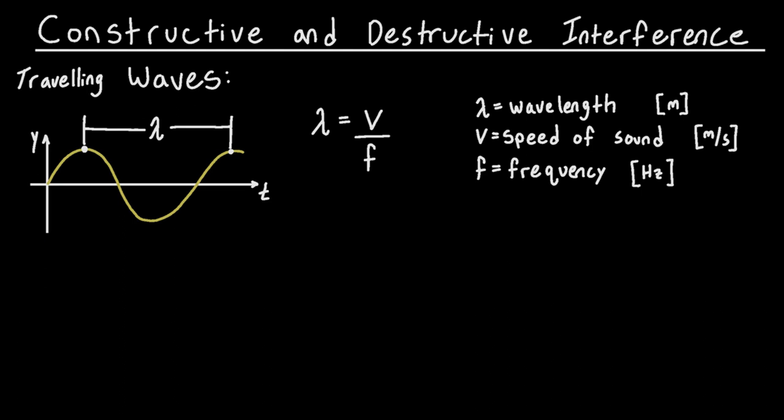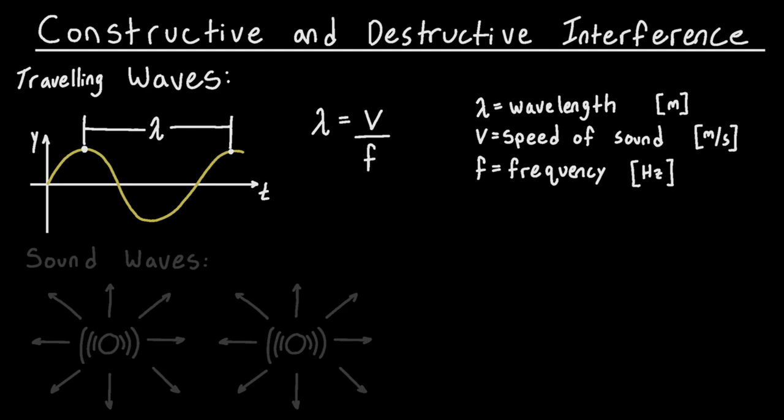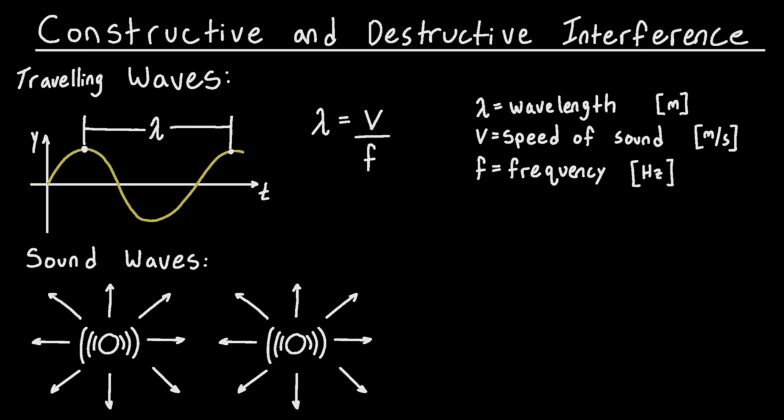Now if we have two sources that are emitting sound waves that are near each other, those two sound waves are going to crash into each other. From superposition we can say that the total sound you'll hear is going to be sound wave one plus sound wave two, and that's going to be important for coming up with our equations for constructive and destructive interference.